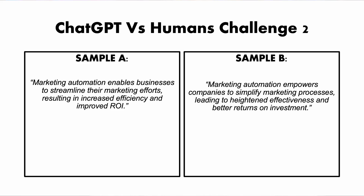Here's the second set of text samples. Sample A: Marketing automation enables businesses to streamline their marketing efforts, resulting in increased efficiency and improved ROI. Sample B: Marketing automation empowers companies to simplify marketing processes, leading to heightened effectiveness and better returns on investment. Take some time to decide and then we're going to reveal the answer.